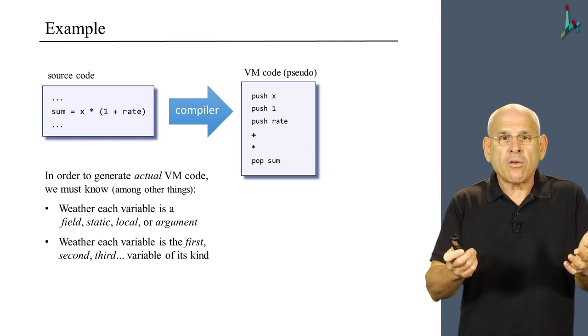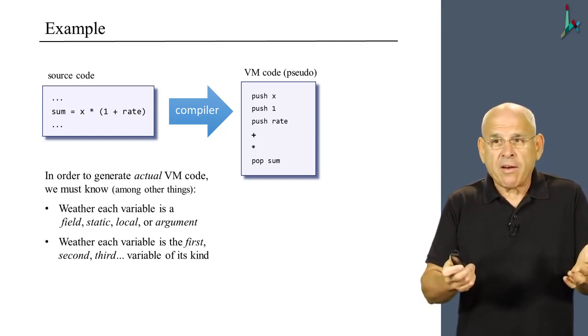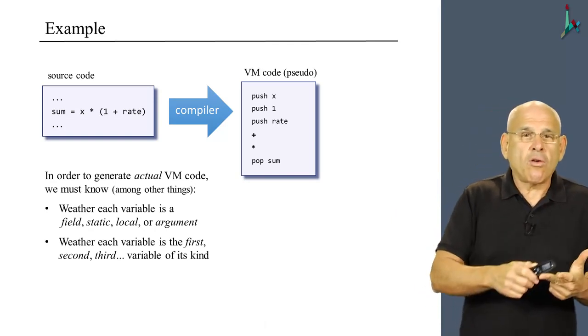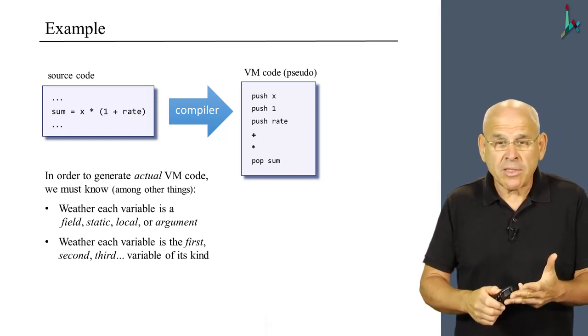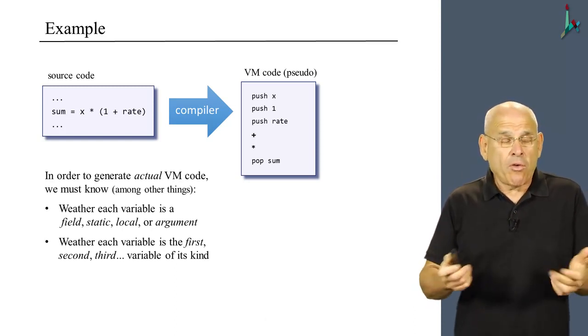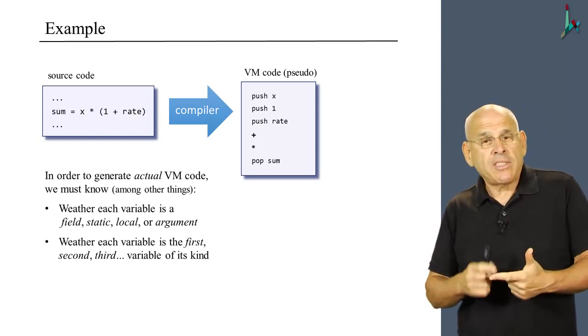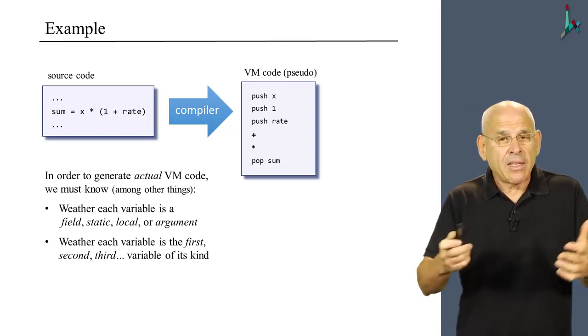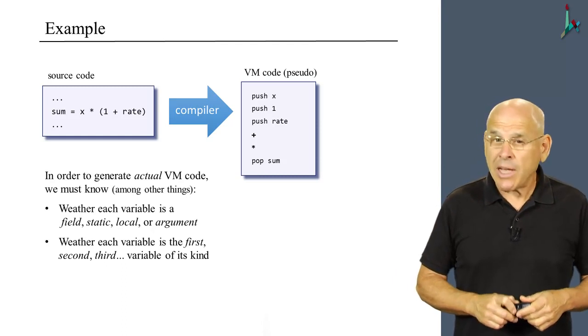In order to generate code, I have to know whether sum, x, and rate are field, static, local, or argument variables. I need this information for every one of these variables. I also have to know, is it the first local variable, or the second local variable, and so on. Once I will have this information, I can indeed go ahead and complete the translation.